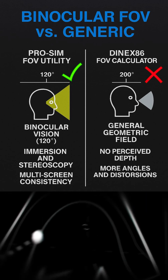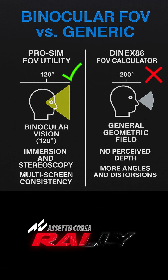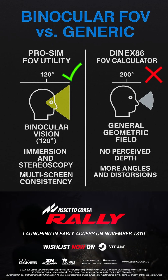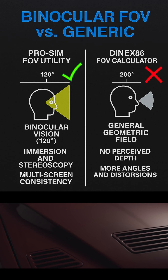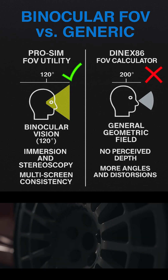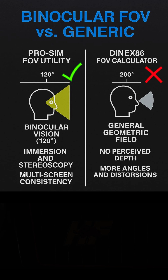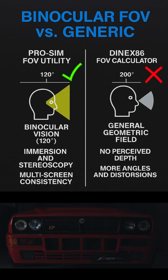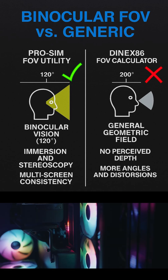For most simulators, a horizontal FOV value will be displayed. This is the angle of view from side to side and is typically what you will need to enter into the in-game settings. Some games, such as Assetto Corsa Rally, use the vertical FOV instead, which represents the angle from top to bottom.